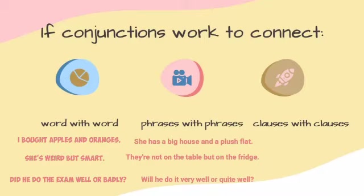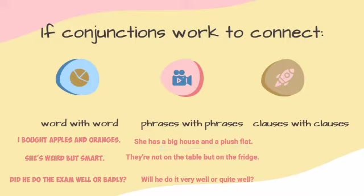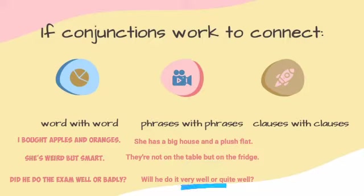Now here are three examples of conjunctions connecting phrases with phrases. In the first sentence, 'and' connects two noun phrases: 'a big house' and 'a plush flat.' In the second sentence, 'but' connects the prepositional phrases 'on the table' and 'on the fridge.' In the last sentence, 'or' connects the adverb phrases 'very well' and 'quite well.'